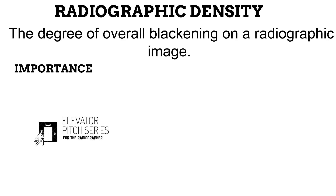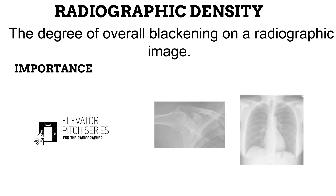If you look at this, you would observe text written in black. There is also an outline of an elevator door drawn in black, and a person also drawn in black. The black helps us to identify text, shapes, and structures. This is the same way blackening helps us to identify various anatomical and pathological structures on a radiographic image.